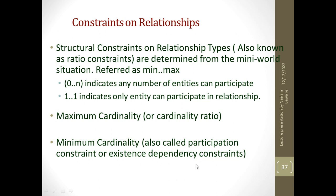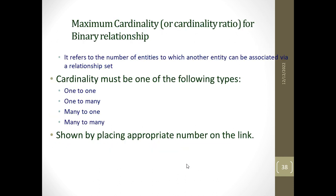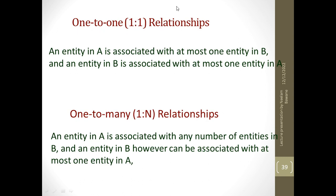Let us look at cardinality ratio and participation constraints. Maximum cardinality, or cardinality ratio, can be defined in various ways: one to one, one to many, many to one, and many to many. We put the number on the link, like one or n. One to one means one entity in A is associated with only one entity in B.